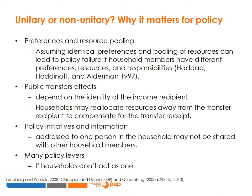Public transfers are often targeted at households but received by individuals. The effect of public transfers may differ depending on the identity of the income recipient. Households may reallocate resources away from the transfer recipient to compensate for the transfer receipt. Policy initiatives and information addressed to one person in the household may not be shared with other household members. And assuming that households act as one disables many policy levers that could be brought to bear on development problems. For example, if women and men have different spending patterns on children's health and education — women spend more — then a transfer intended to benefit children could be given to women rather than men.